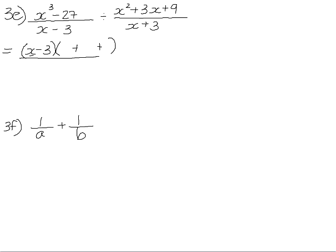The second bracket will be x times x, which is x squared. The product of x and 3, which is 3x. And then 3 squared, which is 9. That will be over x minus 3. We now multiply by the reciprocal, so we'll have x plus 3 over x squared plus 3x plus 9, which doesn't factorize.